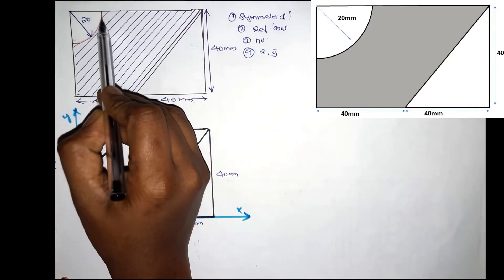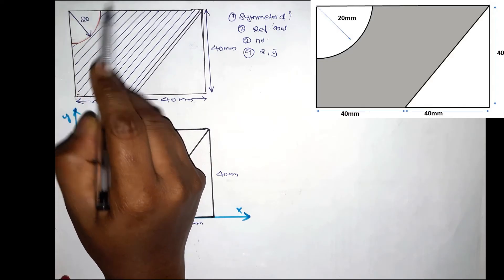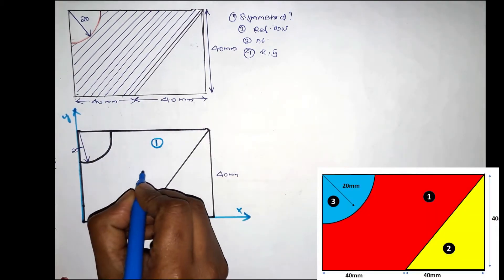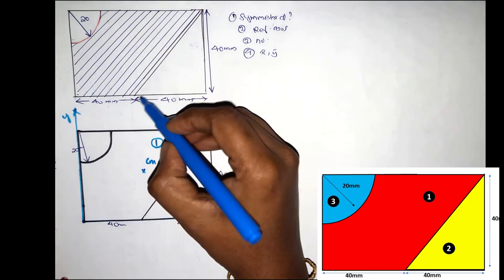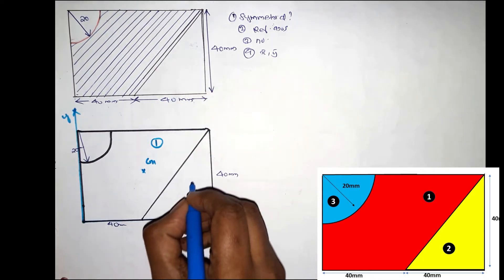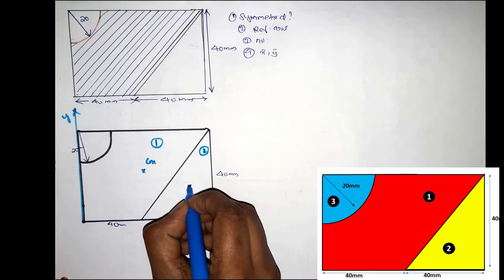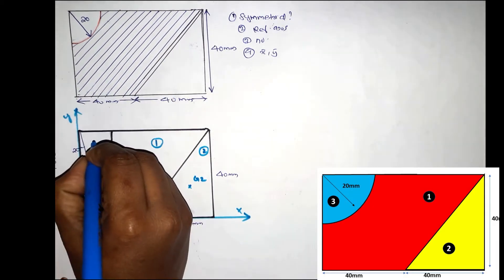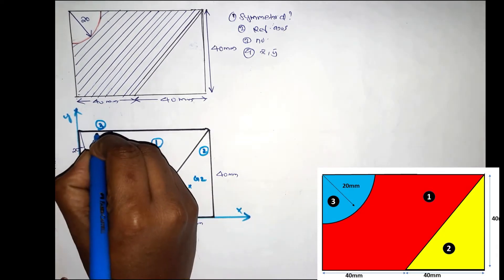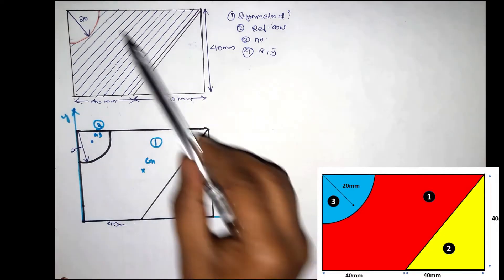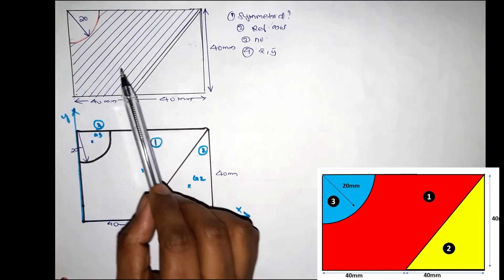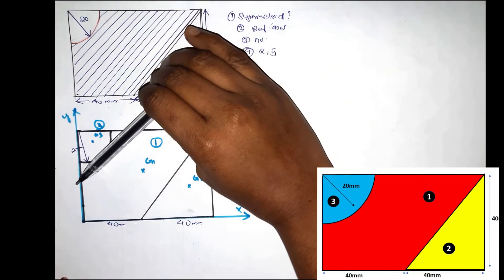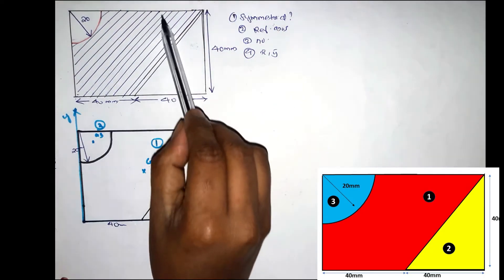We have a rectangle as section 1, with centroid G1. We have a triangle as section 2, with centroid G2. If we have a quarter circle, that is section 3, with centroid G3.